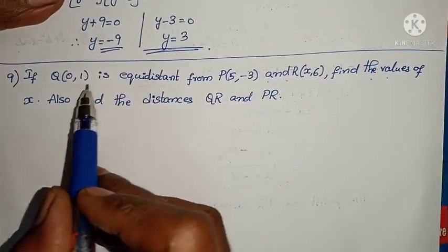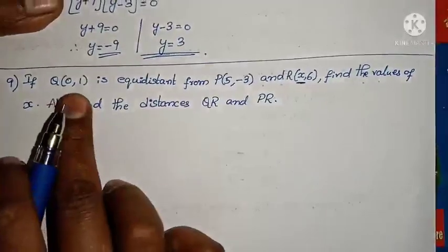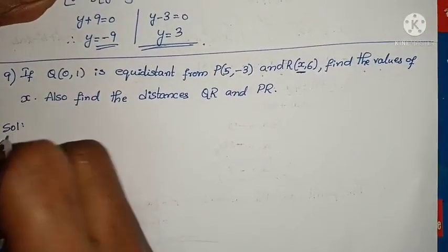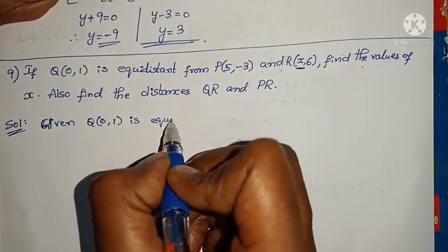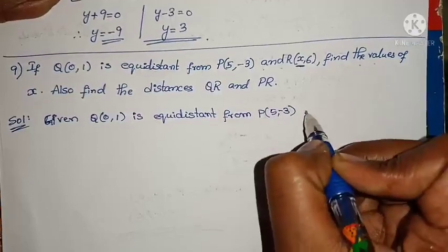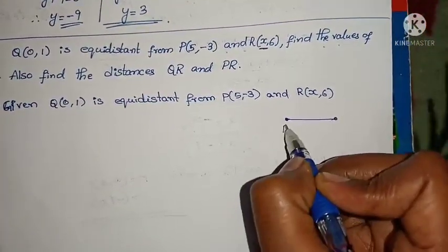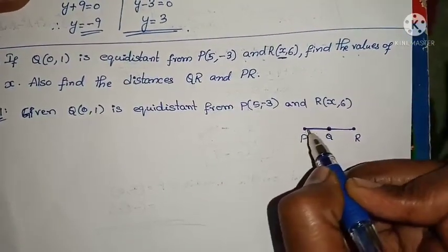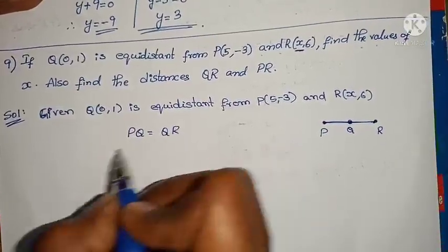Let me go to the next one. If Q (0, 1) is equidistant from P (5, -3) and R (x, 6), find the value of x. Also find the distances QR and PR. Q is equidistant from P and R means we can take PQ equals QR.